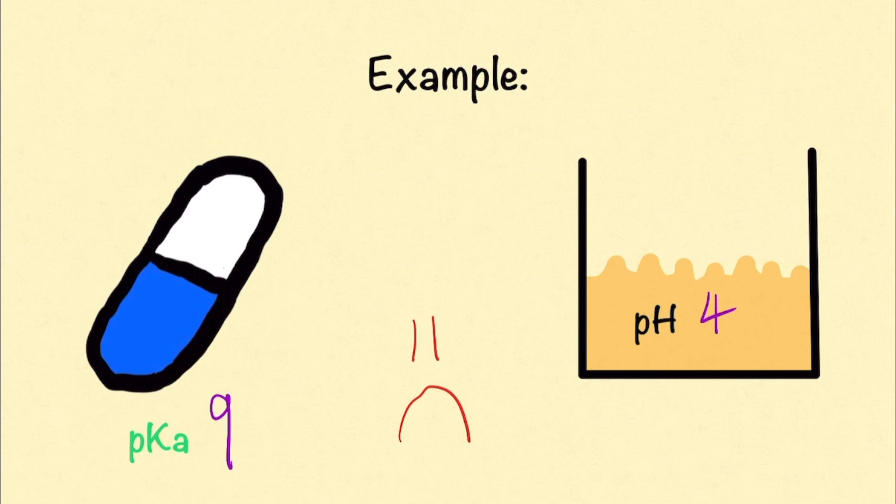What if we change the solution to a pH of 10? The drug with a pKa of 9 would like this basic environment and would be mostly fat-soluble and active.